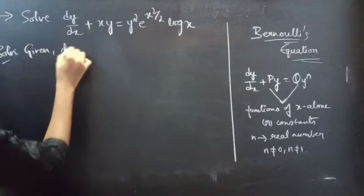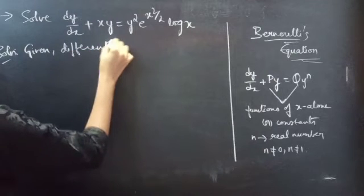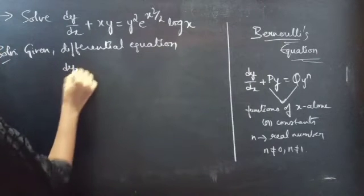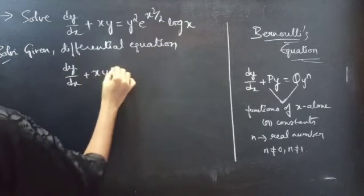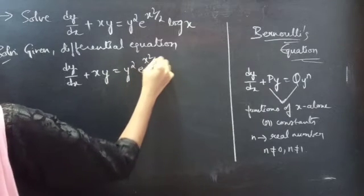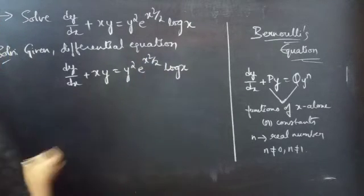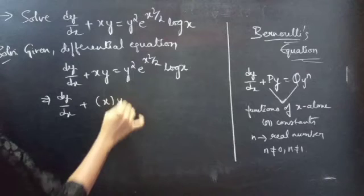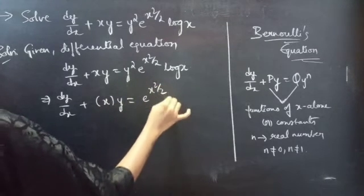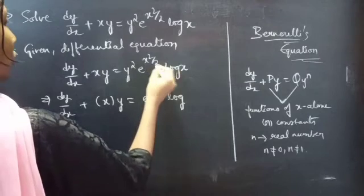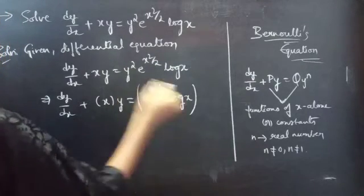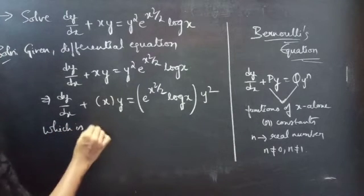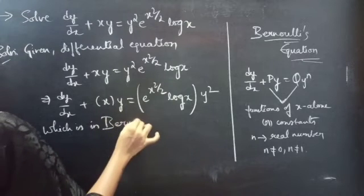Given differential equation: dy/dx plus x times y equals e^(x²/2) times log x. You can write this as dy/dx plus x into y equals e^(x²/2) into log x, which is a function of x into y squared — this is Bernoulli's equation, or which is in Bernoulli's form.